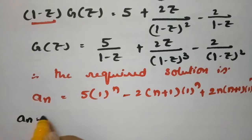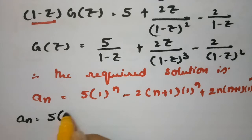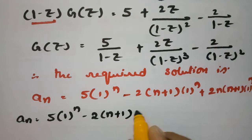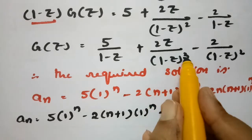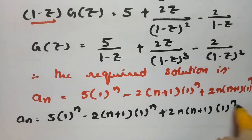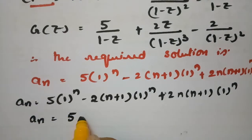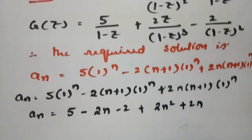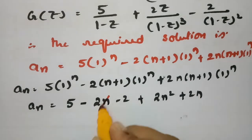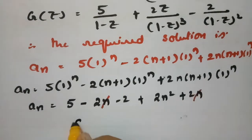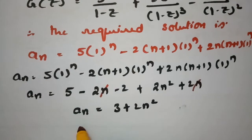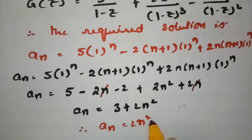So aₙ = 5·1ⁿ − 2·n(n+1)·1ⁿ + 2·n(n+1)·1ⁿ. Expanding: 5 − 2n − 2 + 2n² + 2n. Cancelling +2n and −2n, we get aₙ = 5 − 2 + 2n² = 2n² + 3. Therefore the required solution is aₙ = 2n² + 3.